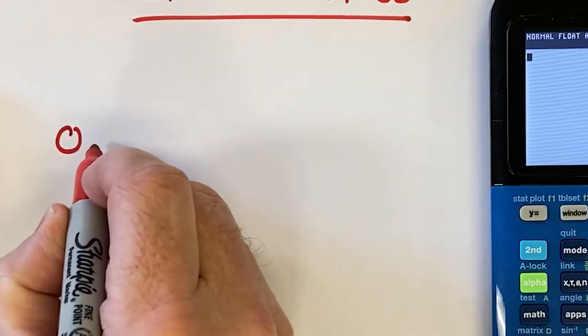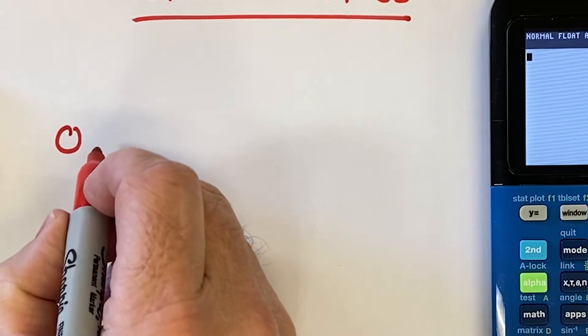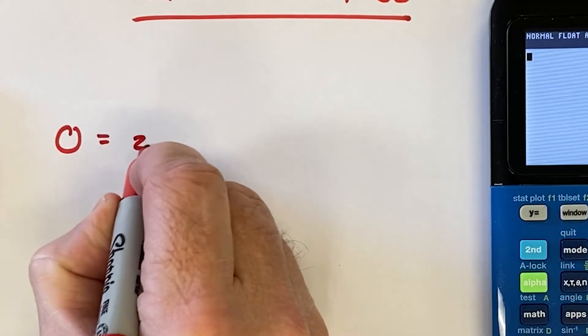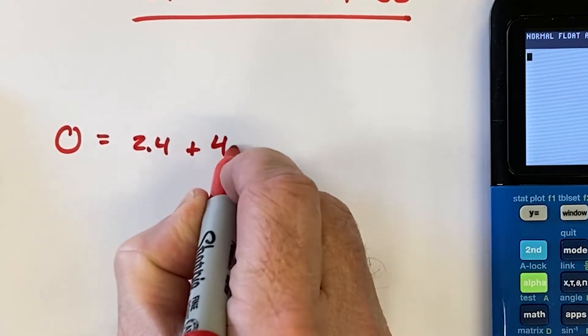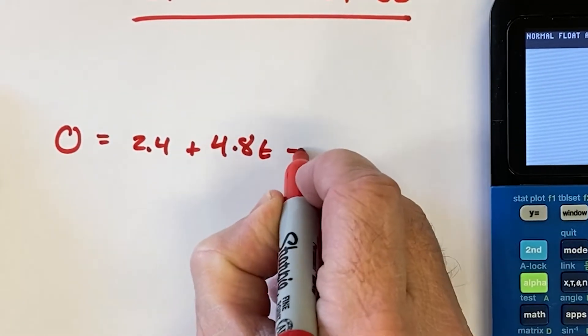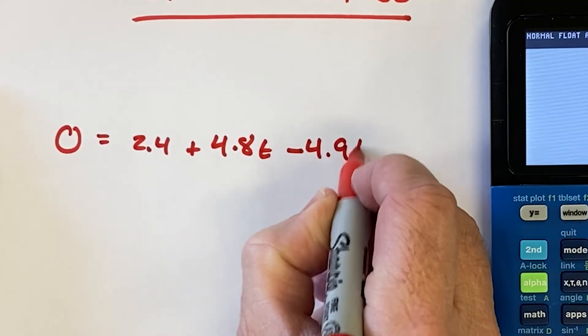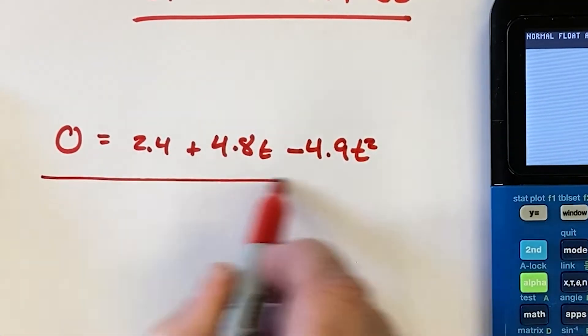So let's say you've got an equation that is zero. I use this in my physics class, recent question. I got zero is equal to 2.4 plus 4.8t minus 4.9t squared. So I want to solve for t.